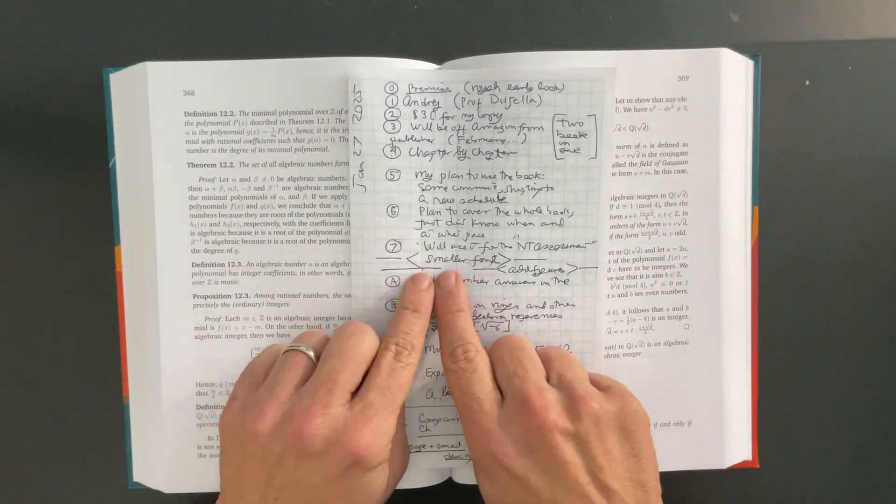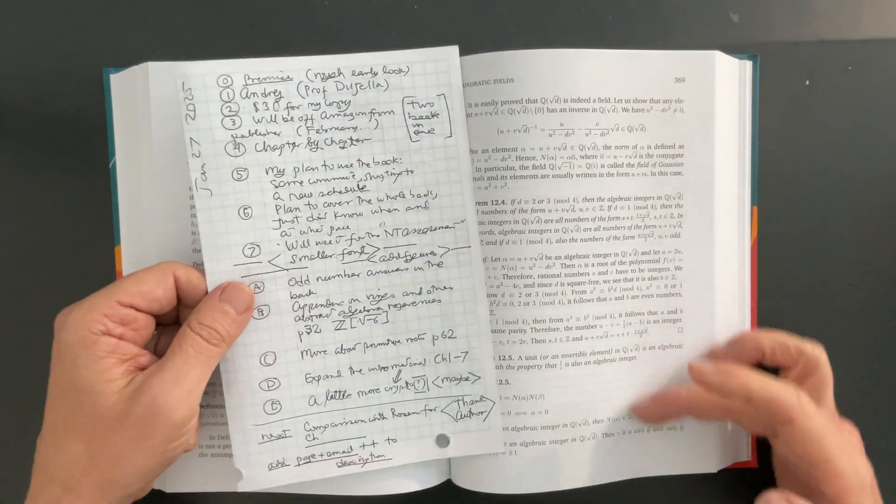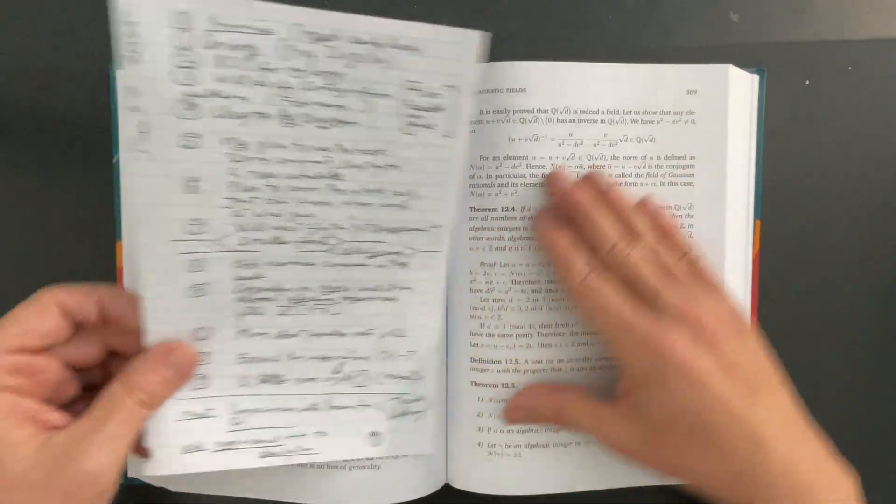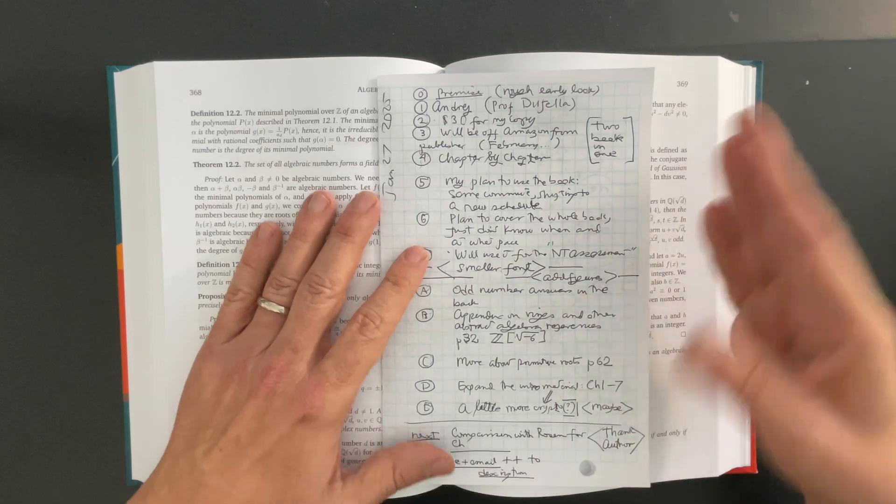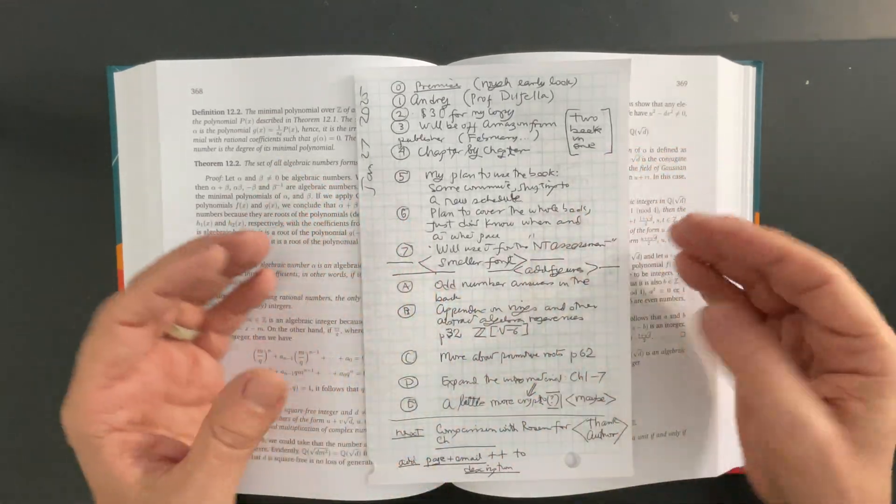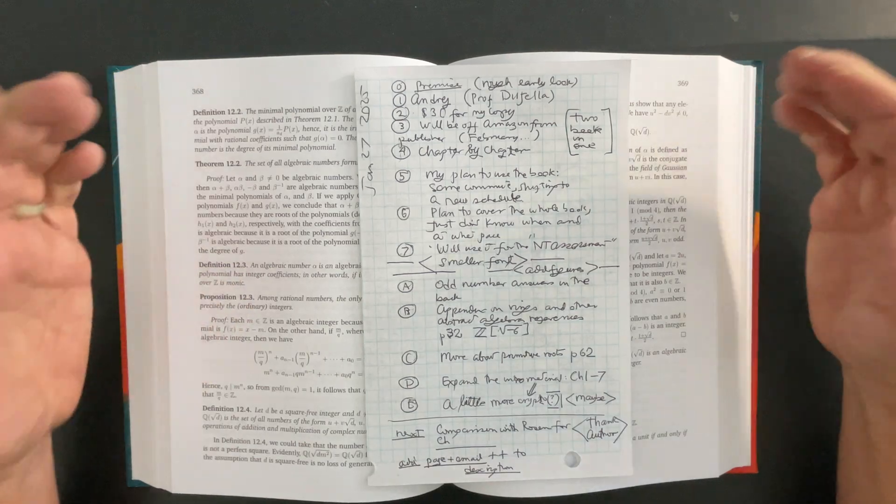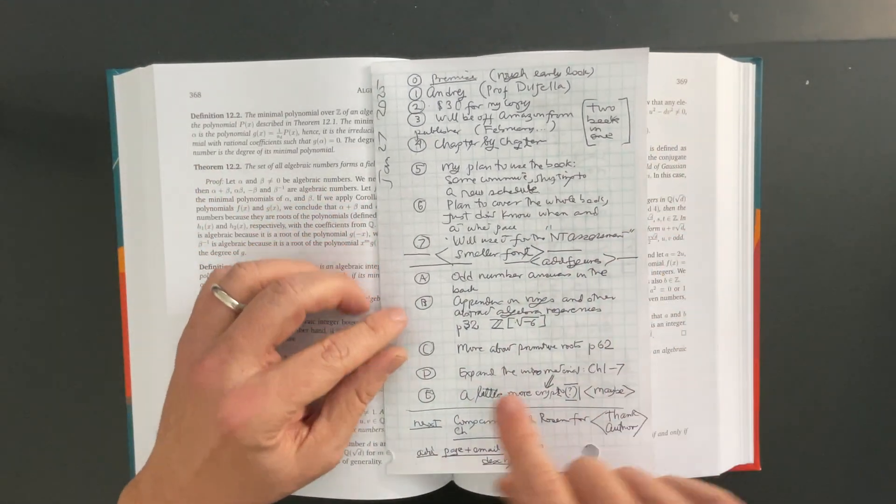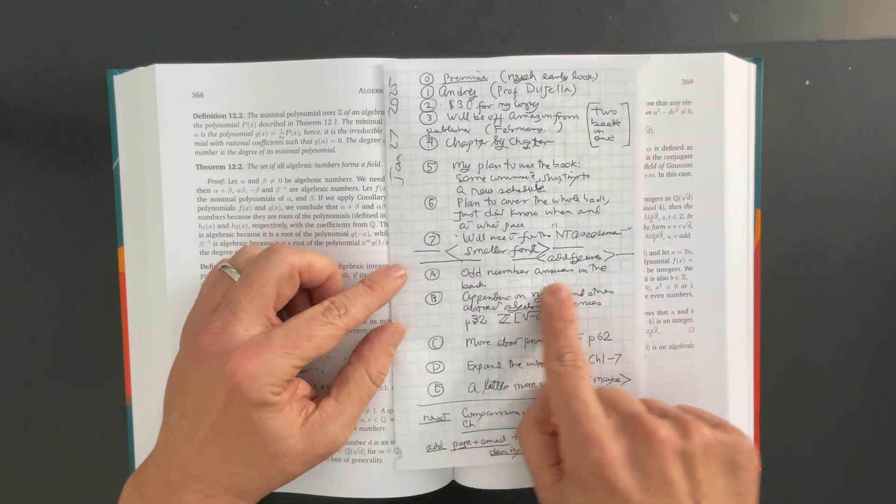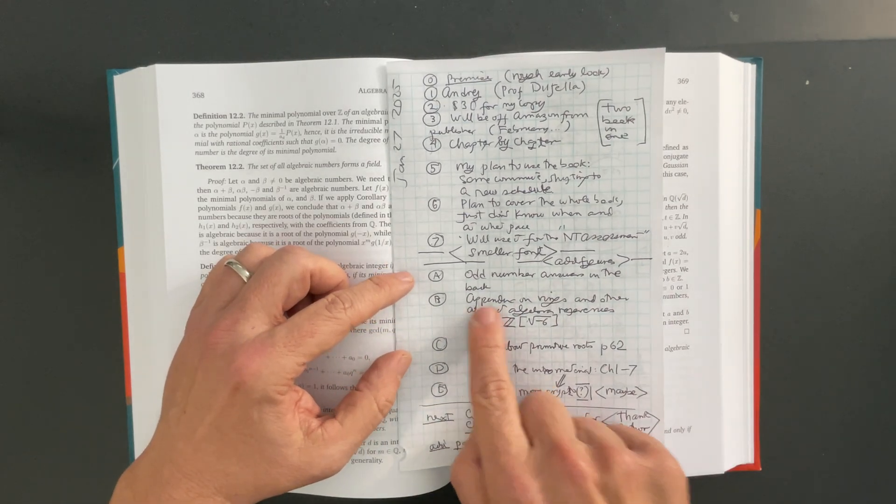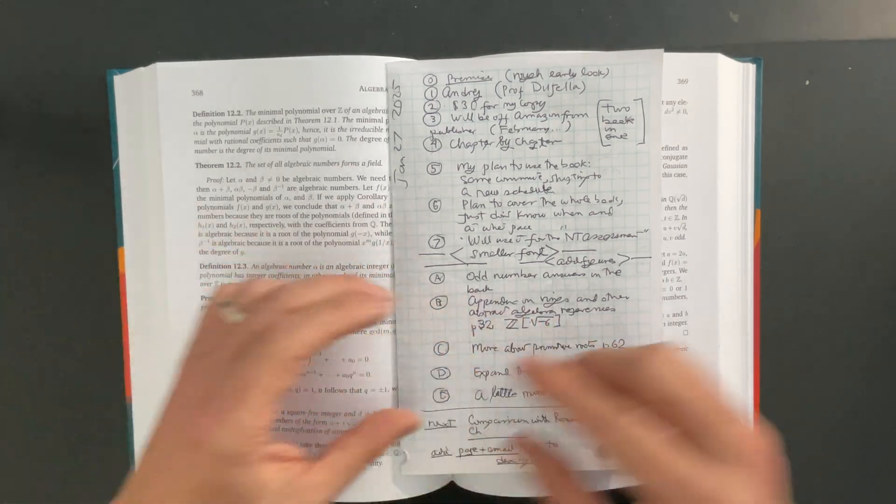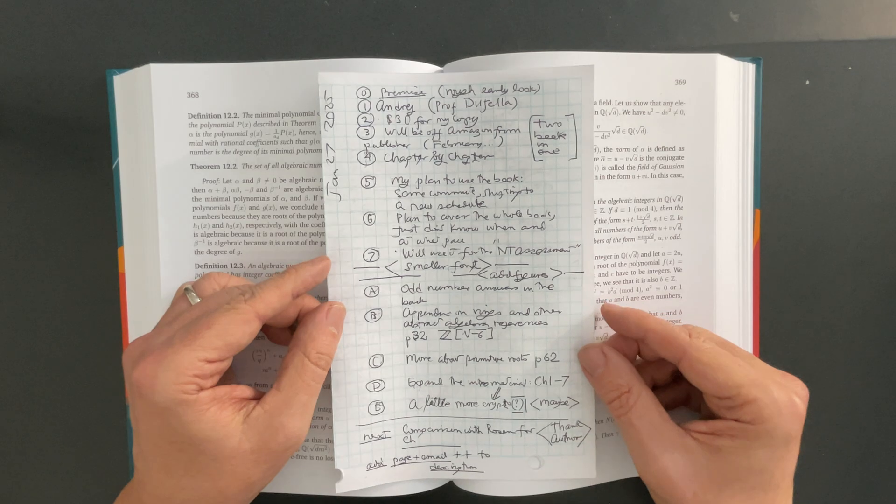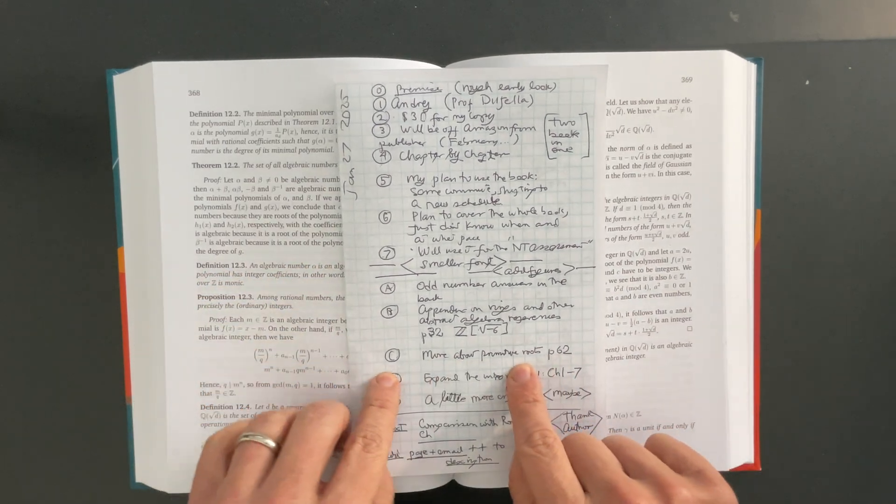I do plan to cover the whole book. I'll use it for my number theory assessment. I wouldn't mind if the book had a smaller font because I think at the page that it's at, it's already a big book. And maybe this book in a later edition could do like Axler and actually just make the font ever so smaller to make, to fit more content. Because I would love to see a little more content. I definitely would love to see odd number answers in the back. I think an appendix or maybe like a small section in the beginning of baby abstract algebra material on rings. I think I would like to see that.